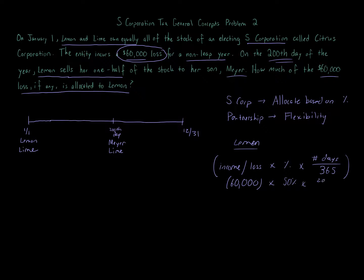We do 50%, and then we're going to take 200 over 365, and that gives us for Lemon the share of loss, $60,000 loss that goes to Lemon. It equals $16,438 of loss to Lemon.